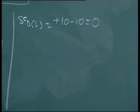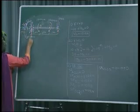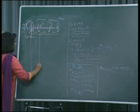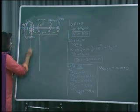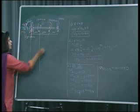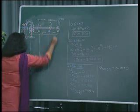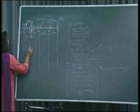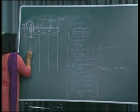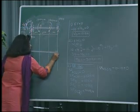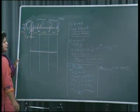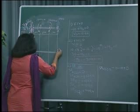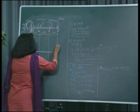Now we have to draw the shear force diagram. We will take all the points in the vertical downward direction, then draw the baseline — positive values above the baseline, negative values below the baseline. To start with, the maximum value we are getting is plus 10, so this will be 5 and this will be 10.